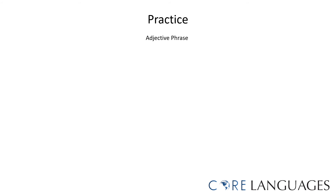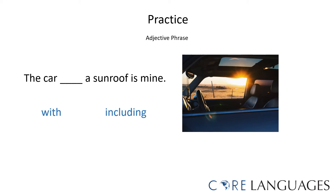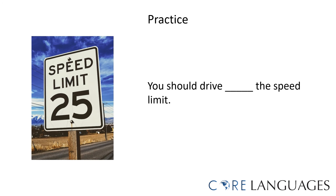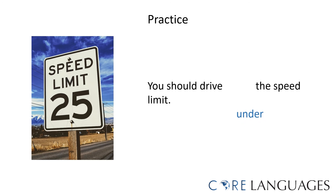Look at this example of an adjective phrase and choose the correct preposition: the car with a sunroof is mine, or the car including a sunroof is mine? The correct sentence is: the car with a sunroof is mine. The phrase 'with a sunroof' serves as an adjective to describe the car. How about: you should drive in front of the speed limit, or you should drive under the speed limit? The phrase 'in front of the speed limit' doesn't really make sense, as the speed limit isn't a location. The correct sentence is: you should drive under the speed limit.